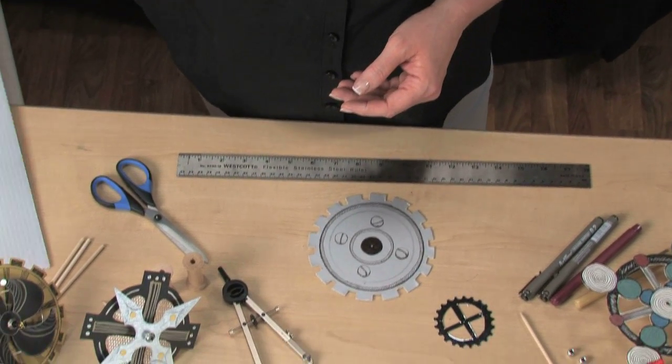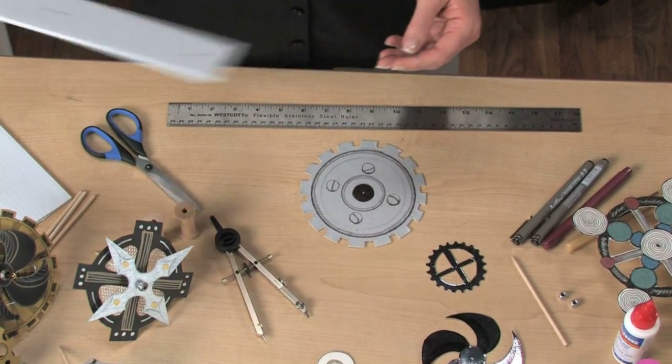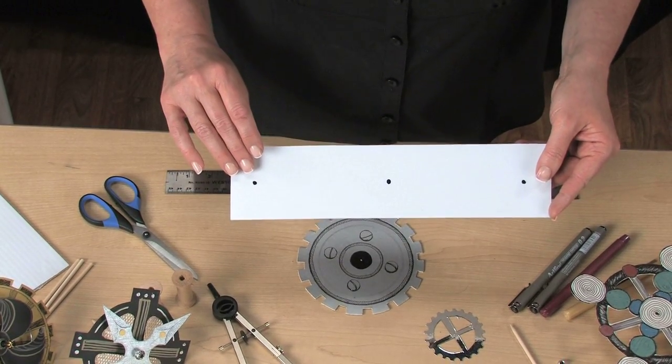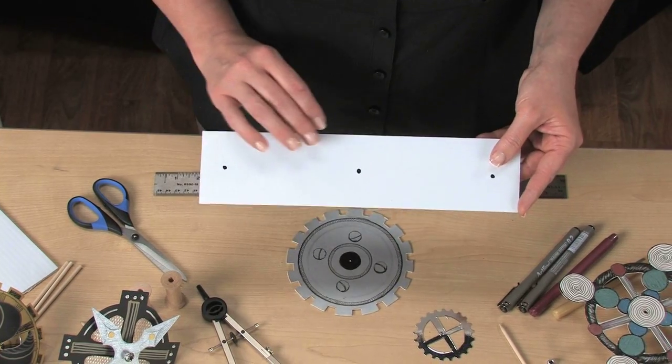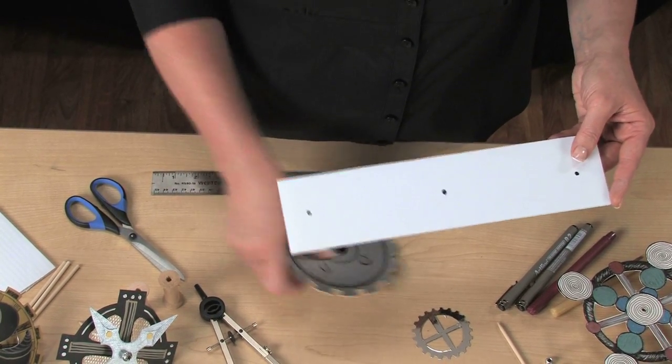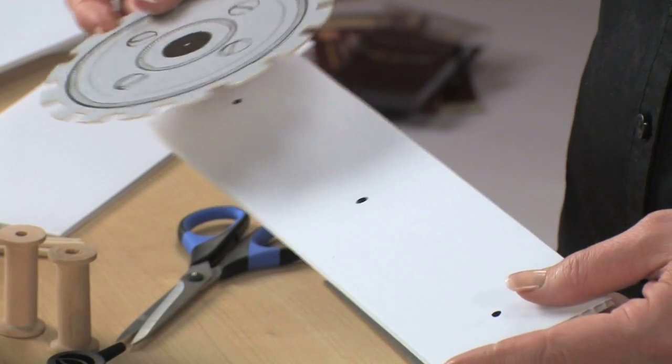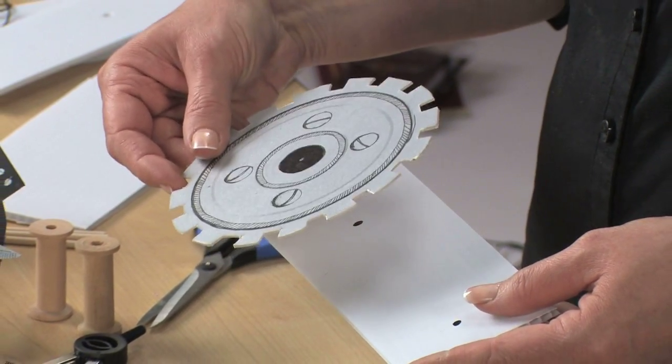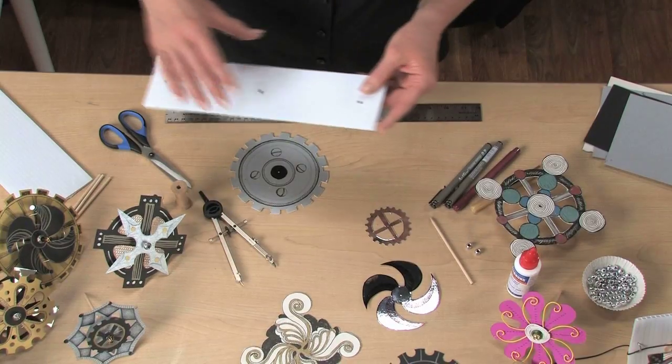Now, to determine the size and placement of the moving parts, measure and mark the panel as I've done here. This will help you decide how large to make the gears or the rotating pieces of the sculpture. They can overlap one another but not run into each other. So these will be about 5 inches in diameter.